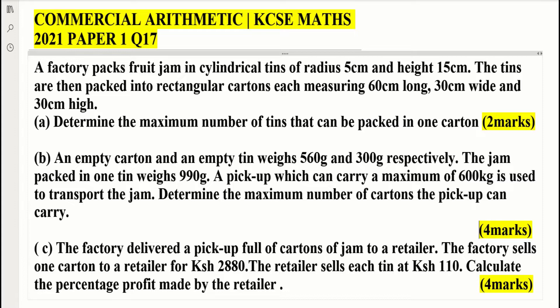An empty carton and an empty tin weighs 560 grams and 300 grams respectively. The jam packed in one tin weighs 990 grams. A pickup which can carry a maximum of 600 kg is used to transport the jam. Determine the maximum number of cartons the pickup can carry. The factory delivered a pickup full of cartons of jam to a retailer. The factory sells one carton to a retailer for 2880 Kenyan shillings. The retailer sells each tin at 110 Kenyan shillings. Calculate the percentage profit made by the retailer.